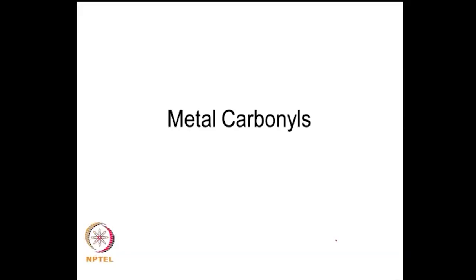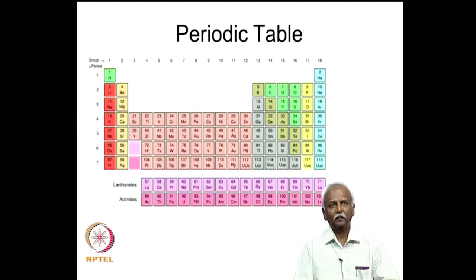Today, we will discuss one of the most common ligands in organometallic chemistry: carbon monoxide. Carbon monoxide is probably most frequently encountered in organometallic chemistry, and a significant portion of the literature available today deals with at least one carbon monoxide ligand in the coordination sphere of the metal. Almost the whole periodic table can be involved in the chemistry of carbon monoxide and metals.